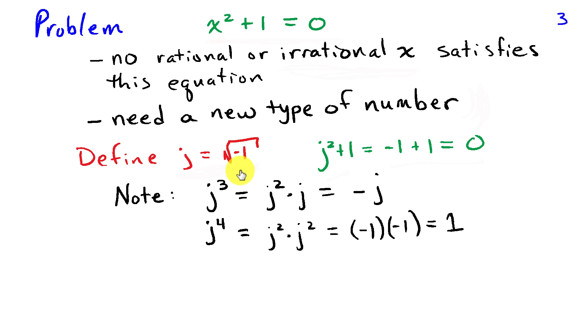From this definition, there's some other properties that this number has. In particular, if I look at j³, I can write that as j² times j. That becomes negative j. Similarly, j to the fourth, I can write as j² times j². That's just minus 1 times minus 1, which is 1. From this definition, we can derive some very simple properties of this new number.